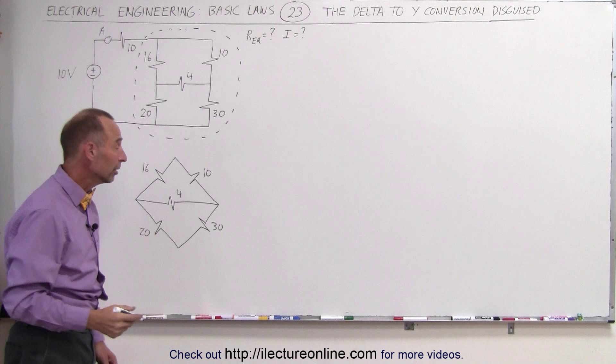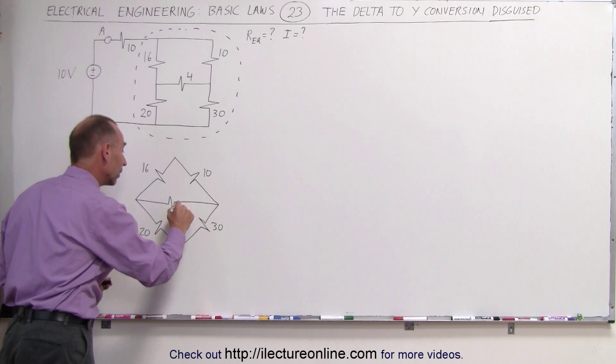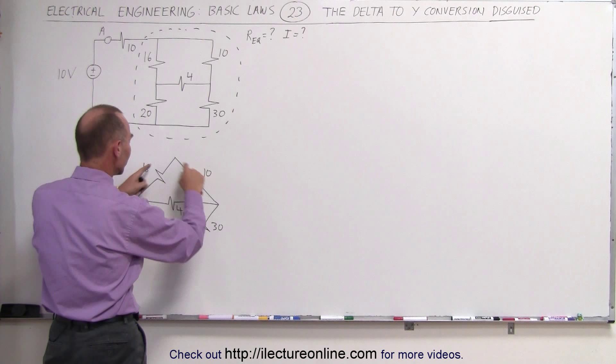And then you realize, oh, here's the delta. I can figure this out. I can solve this by converting this into a y portion of the circuit. So do a delta-to-y conversion. And then you realize that when I take the top half of this, the delta portion of this, and make it look like this, I can go ahead and solve this circuit.